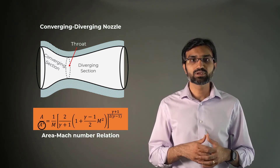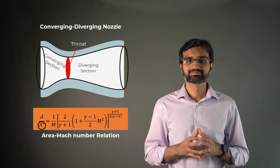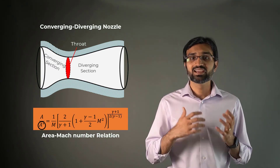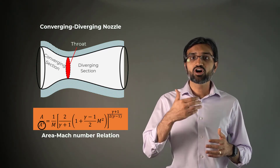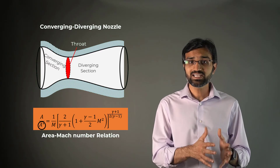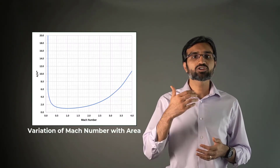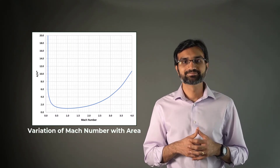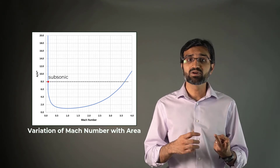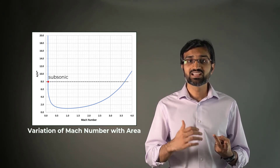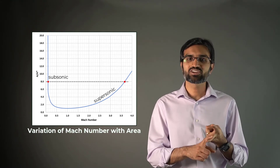Notice the presence of a variable called A*, which is the sonic throat area. From this equation, it is clear that the Mach number at any location in the nozzle is a function of the ratio of the local duct area to the sonic throat area. Here is a plot of the area-Mach number relation. There are two values of Mach numbers that will satisfy the equation at any given area ratio: a subsonic value and a supersonic value.